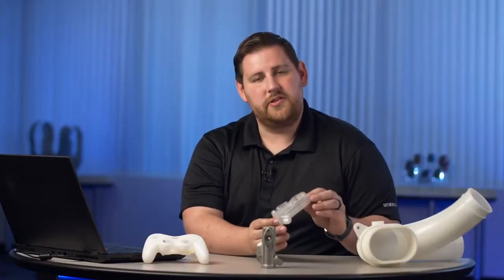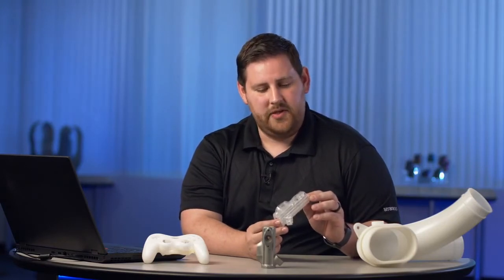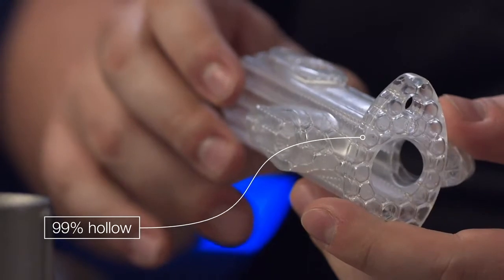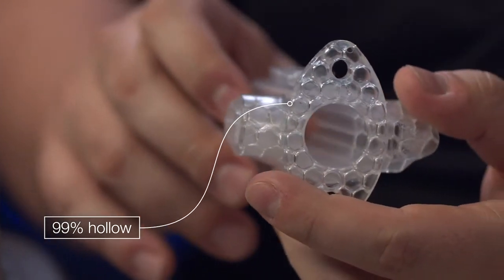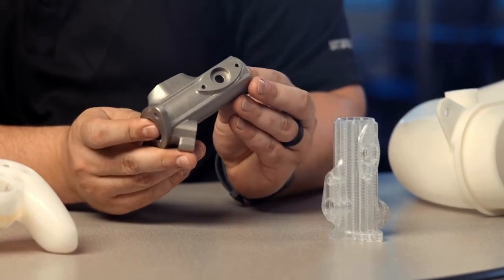So for instance right here, this is a throttle body we have that was printed in a hollow casting pattern style. So it is 99% hollow and then we use this and encase it in ceramic. We burn out the master pattern in the ceramic and then we pour in the metal and we get the final metal part.